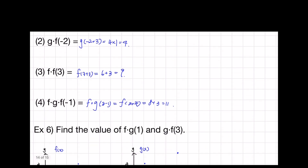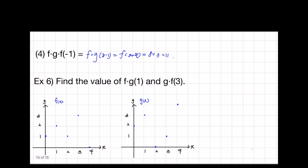Now let's see number six. We have to find f of g of 1 and g of f of 3. Let's find f of g of 1 first. g of 1 in the graph we can see is equal to 3, and in the graph of f, we can see f of 3 is equal to 3. So f of g of 1 is equal to 3. And how about g of f of 3? f of 3 is equal to 3 in the graph, and g of 3 is equal to 1, according to the graph.